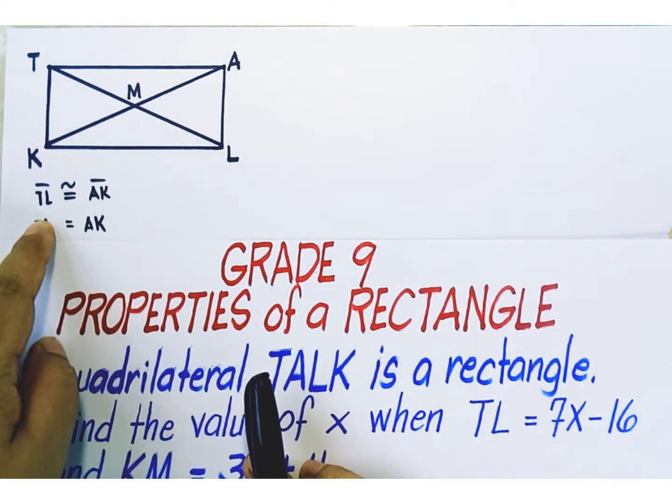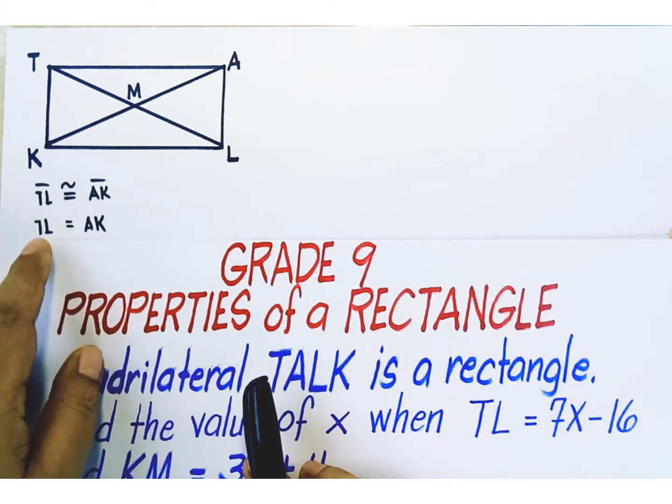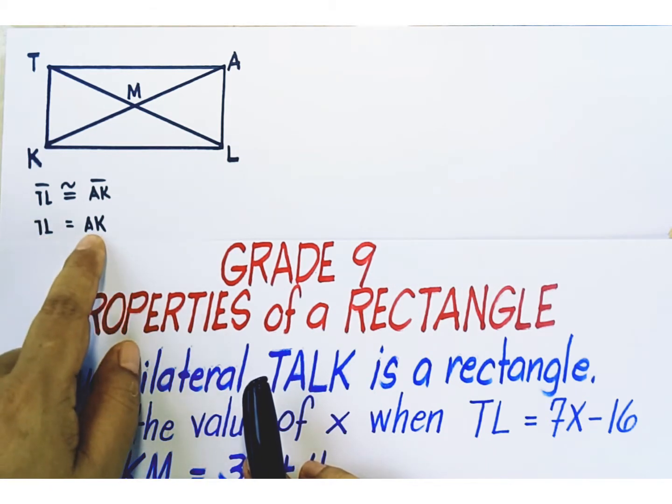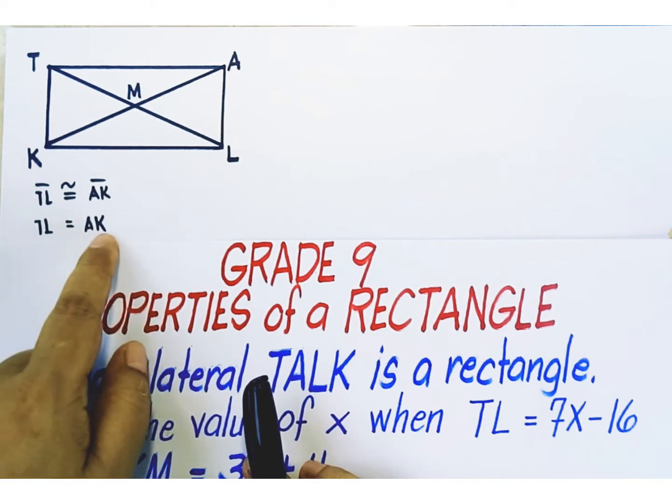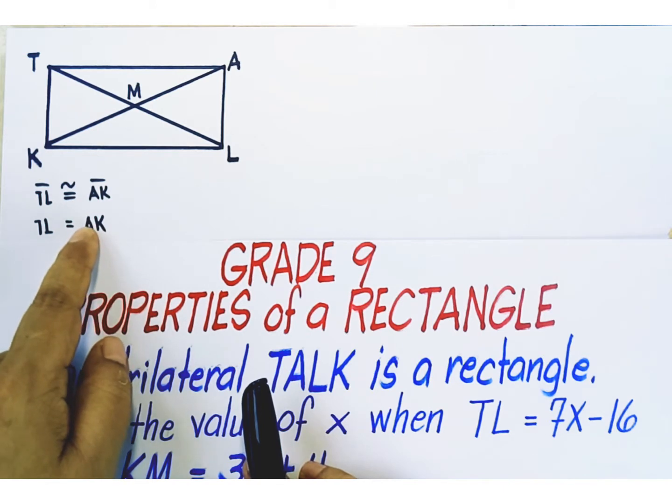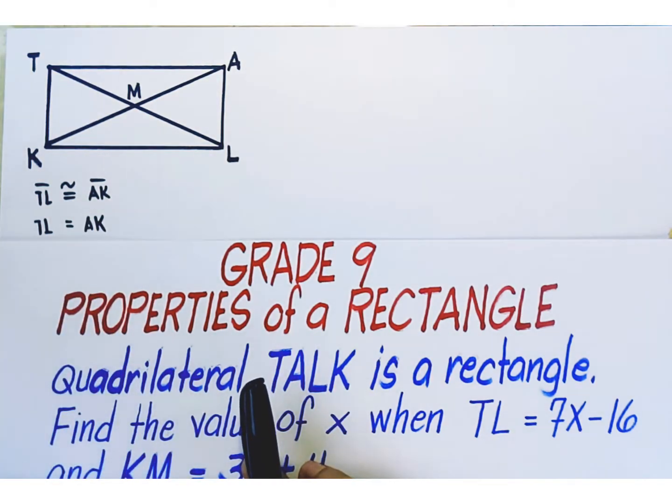If there's no bar above TL, it means that we are referring to the length. Same with AK. When we remove the bar above AK, it means that we are actually referring to the measure of AK.